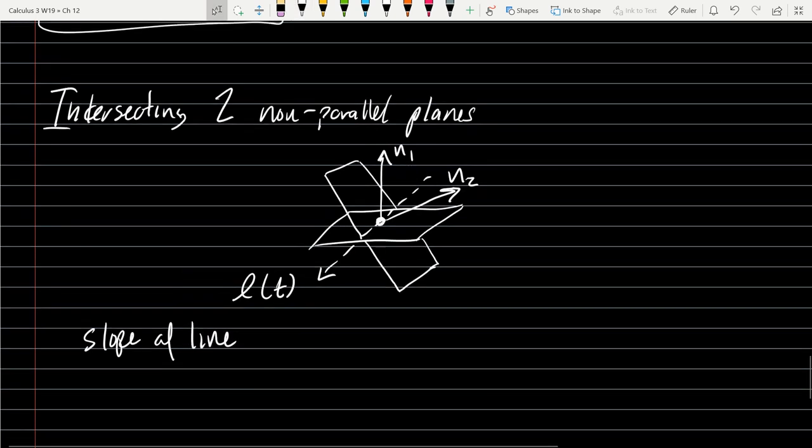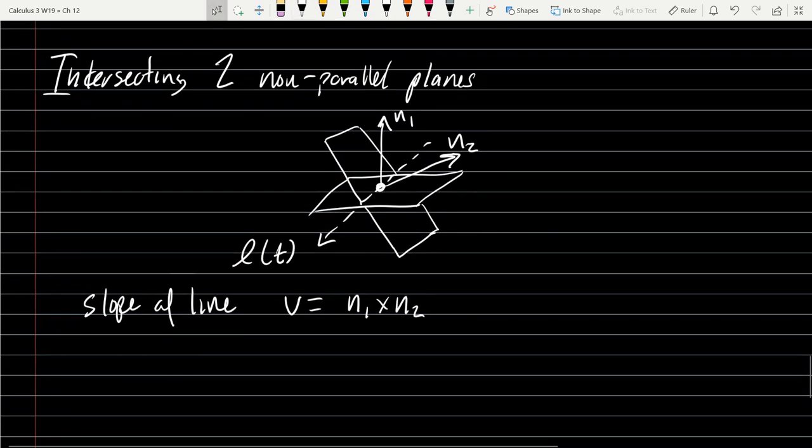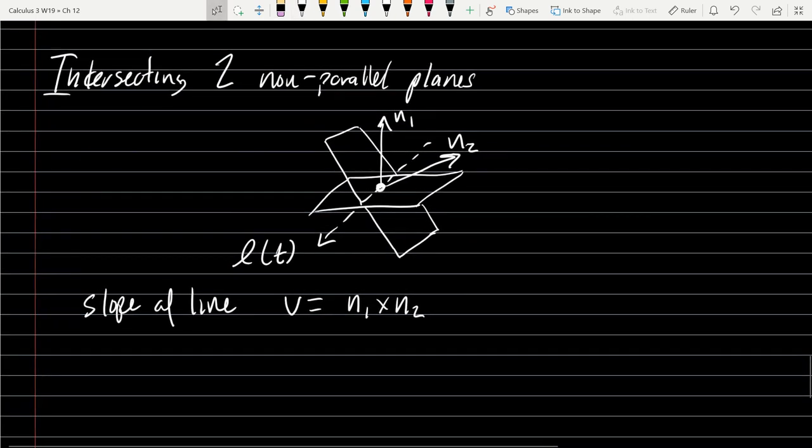So the slope, use V for the slope. So we just do N1 cross N2. You could normalize that depending on what you need to do, but I'm not going to here.